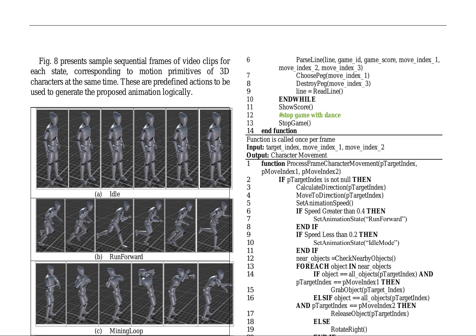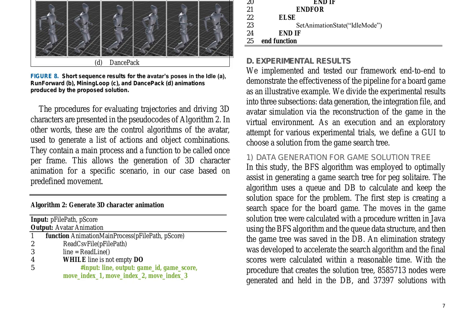Inverse kinematics is an essential process for computer animation and robotics, used to determine variable joint parameters of a character's motion. Motion interpolation is a common method used in computer animation to fill in values between frames and smooth the appearance of motion. An animation tree is used to simplify animation, integrating animation clips with given parameters and transitions between states. The animation tree has three parameters — speed, throw, and dance — which control the animation flow in a sequence within the control logic in C. These predefined actions, called motion primitives, are used to generate the proposed animation logically, and the procedures for evaluating trajectories and driving 3D characters are presented in the pseudocode of algorithm 2.